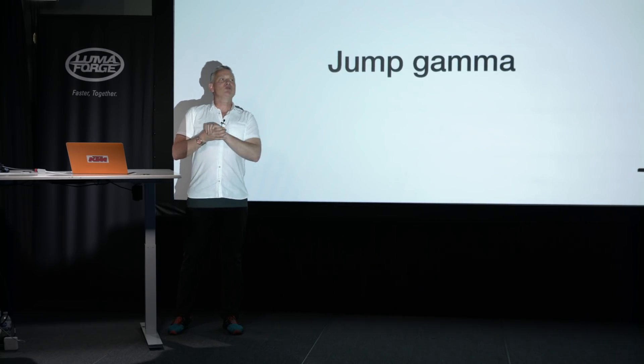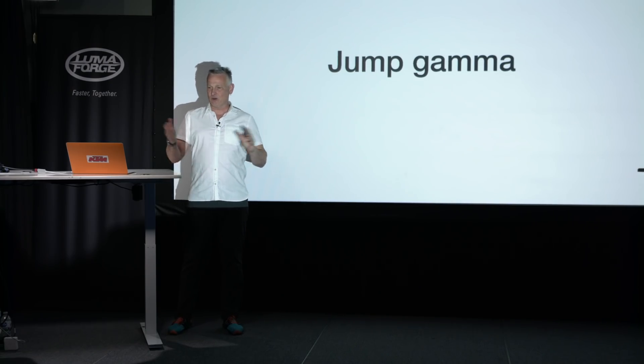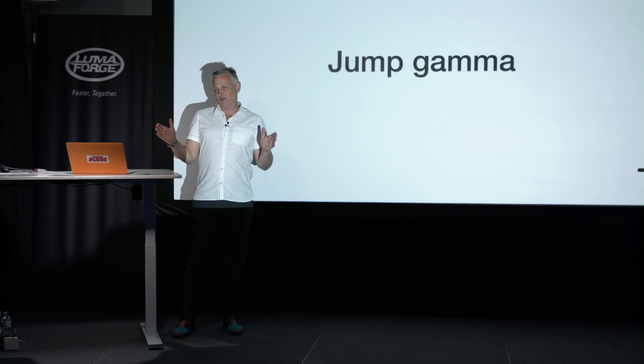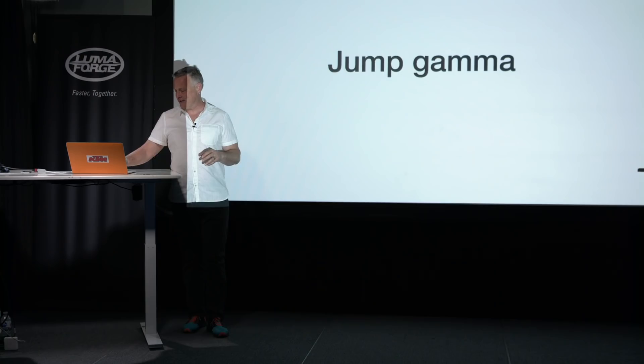Jump gamma. The Google Jump system delivers lower res proxies at 2880 by 2880, and then the high res versions — which you're supposed to online with — have a gamma problem. The black levels are off in the high quality footage coming out of the Jump platform. You can basically reconvert them to ProRes to get higher quality, since it works much simpler in ProRes in Final Cut. So be aware of that if you're using Jump for any deliveries.